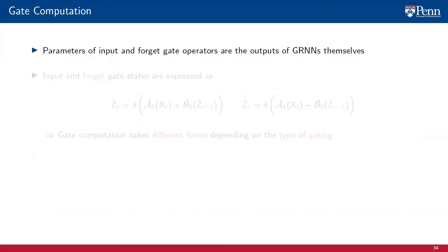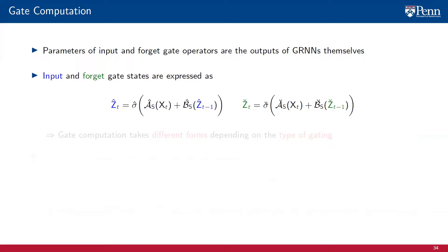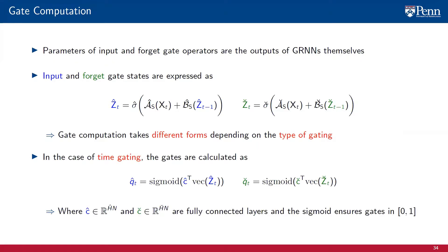In all gating strategies, the parameters of the input and forget gate operators are computed as the outputs of GRNNs themselves, meaning gated GRNNs actually consist of three GRNNs: one to compute the main state c_t, and two others to compute the input gate state and the forget gate state. In time gating, the scalar input gate q-hat(t) is computed by applying a fully connected layer ĉ to the input gate state, followed by a sigmoid. The scalar forget gate q-check(t) is computed by applying a fully connected layer č to the forget gate state, also followed by a sigmoid. The sigmoid activation function ensures these gates take values in the 0-1 interval.